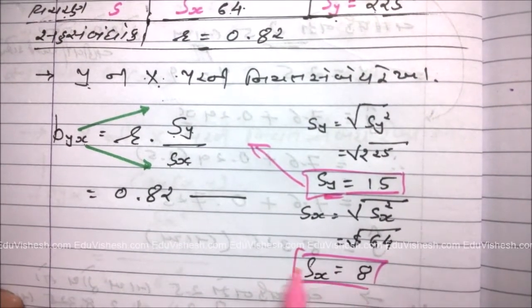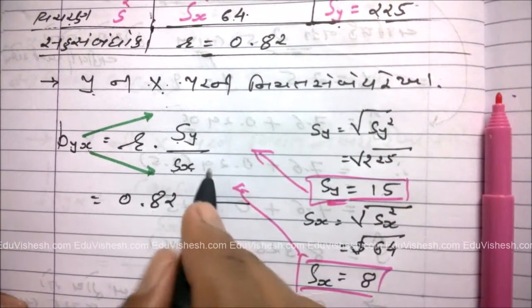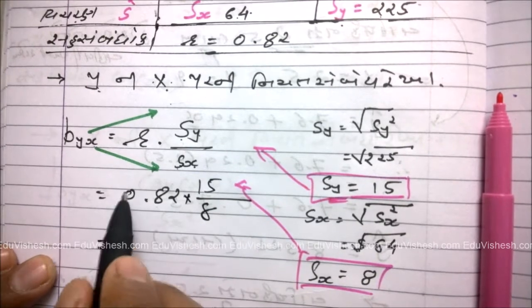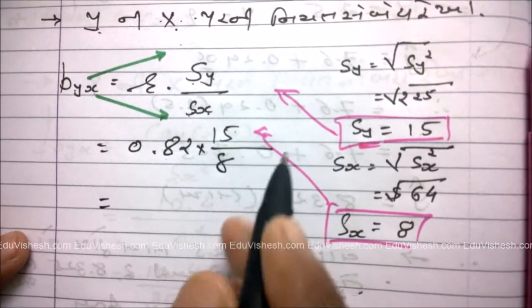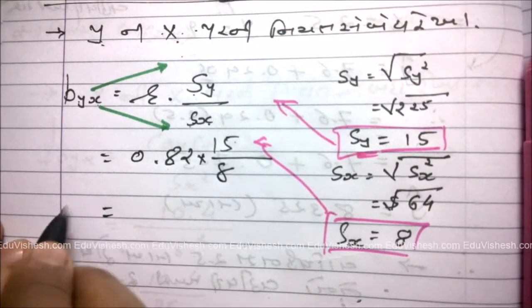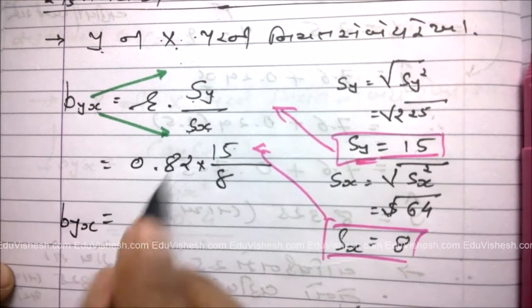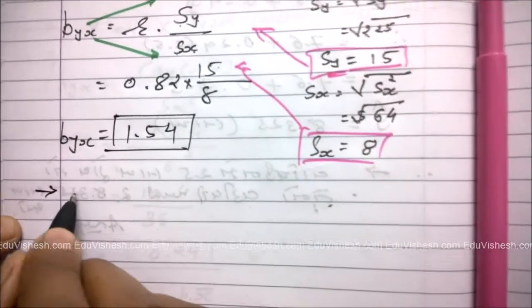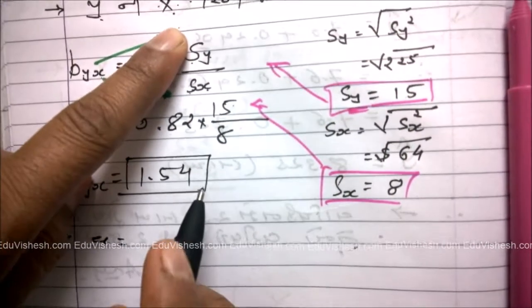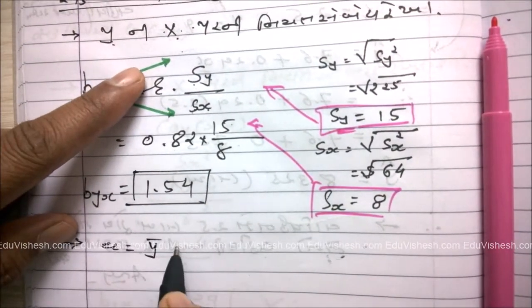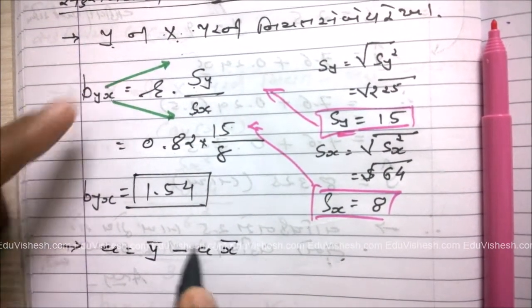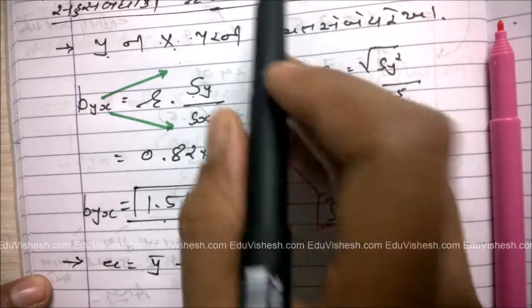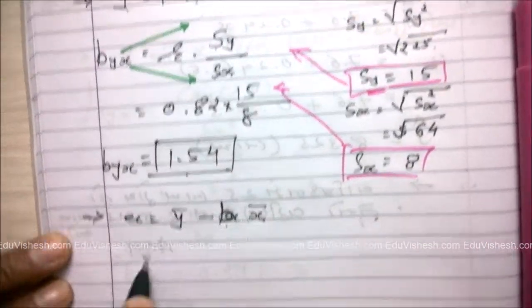ગણતરી કરતા byx = 1.54 મળે છે. ત્યાર પછી 'a' ની કિંમત સોધીએ. a = Ȳ − byx × X̄ ફૉર્મ્યૂલા ઉપયોગ કરી, X̄ ની કિંમત મૂકીએ.